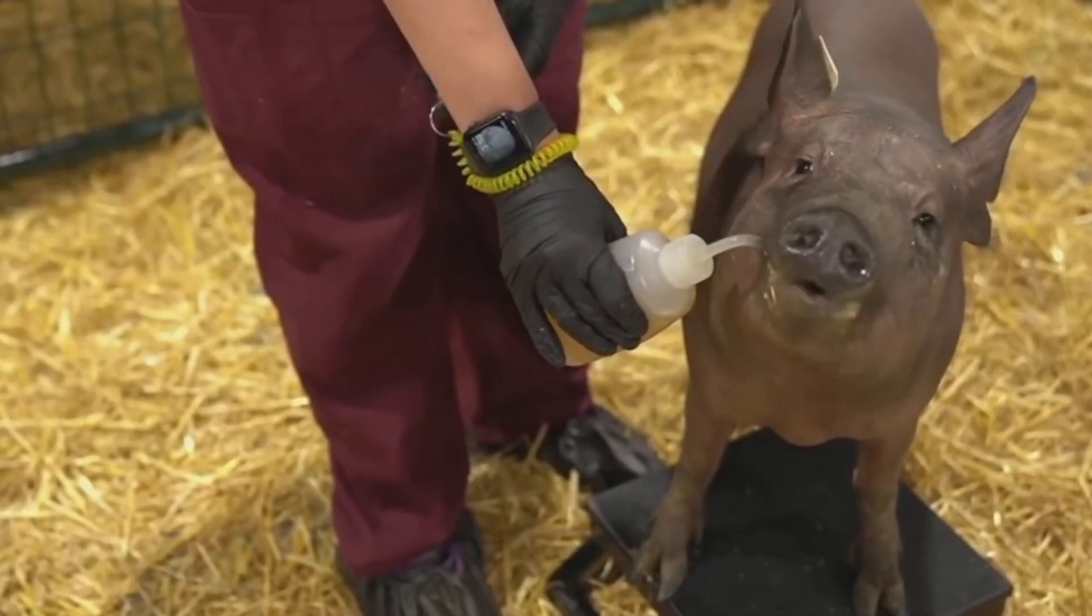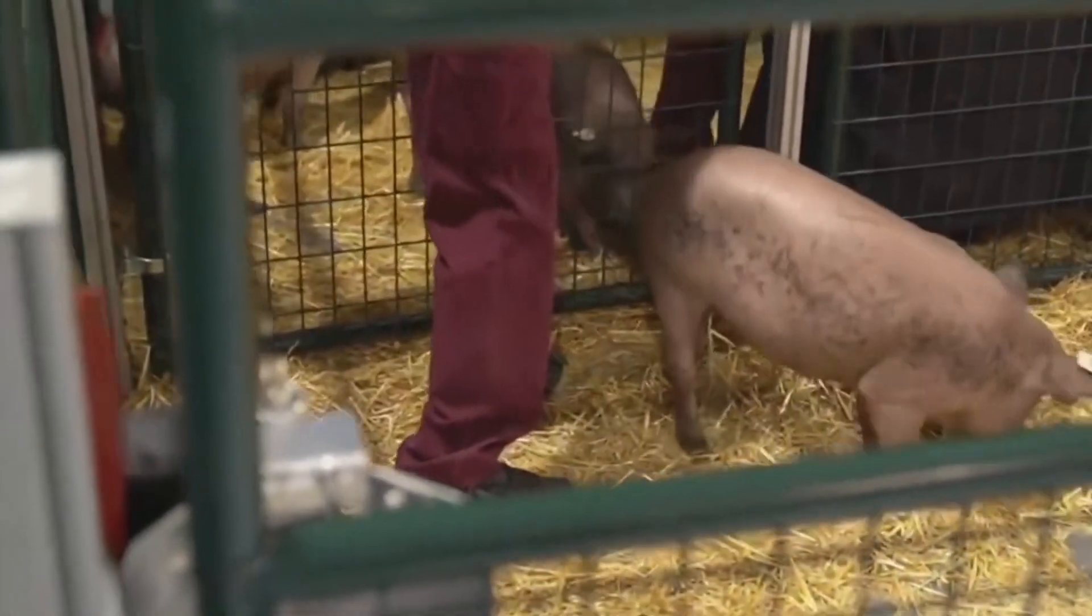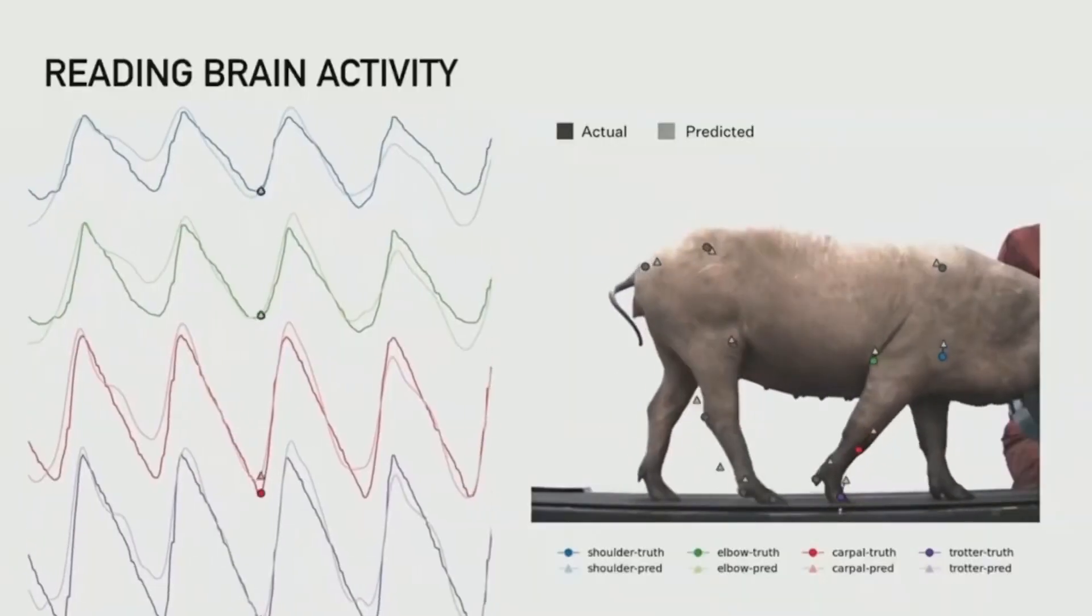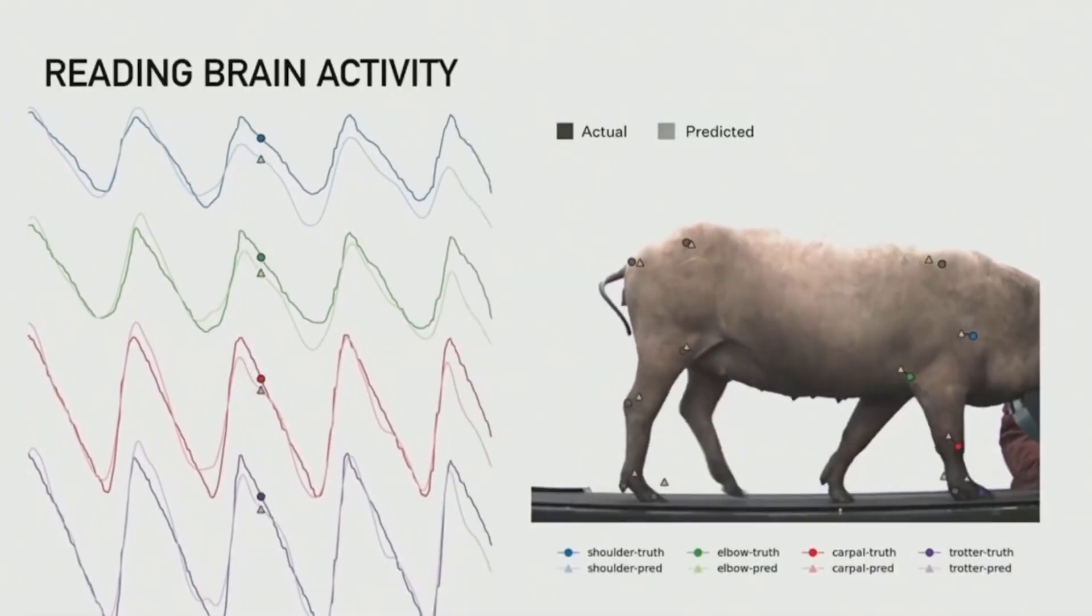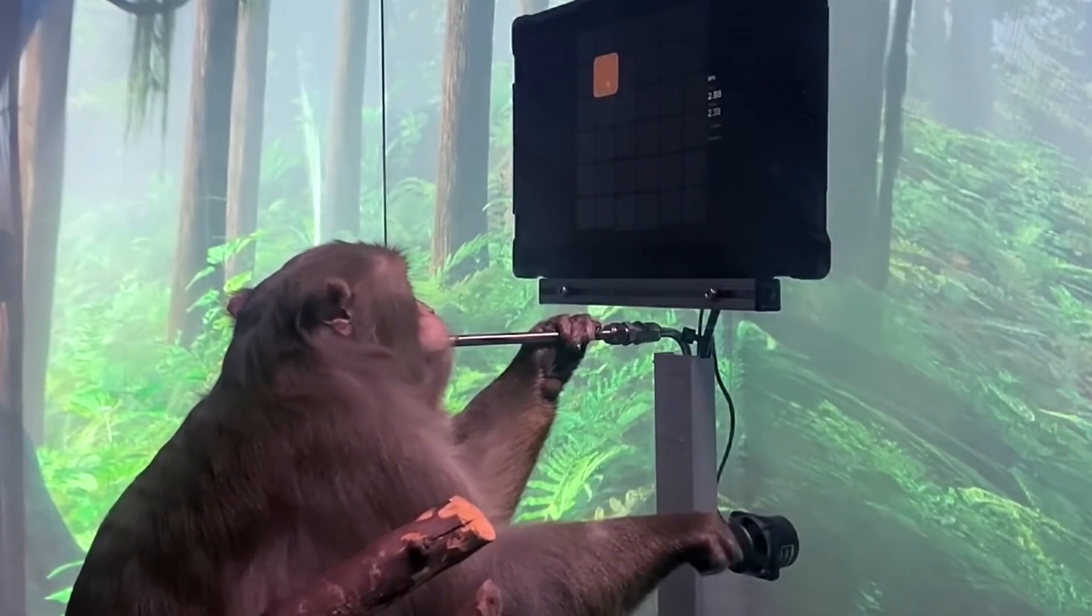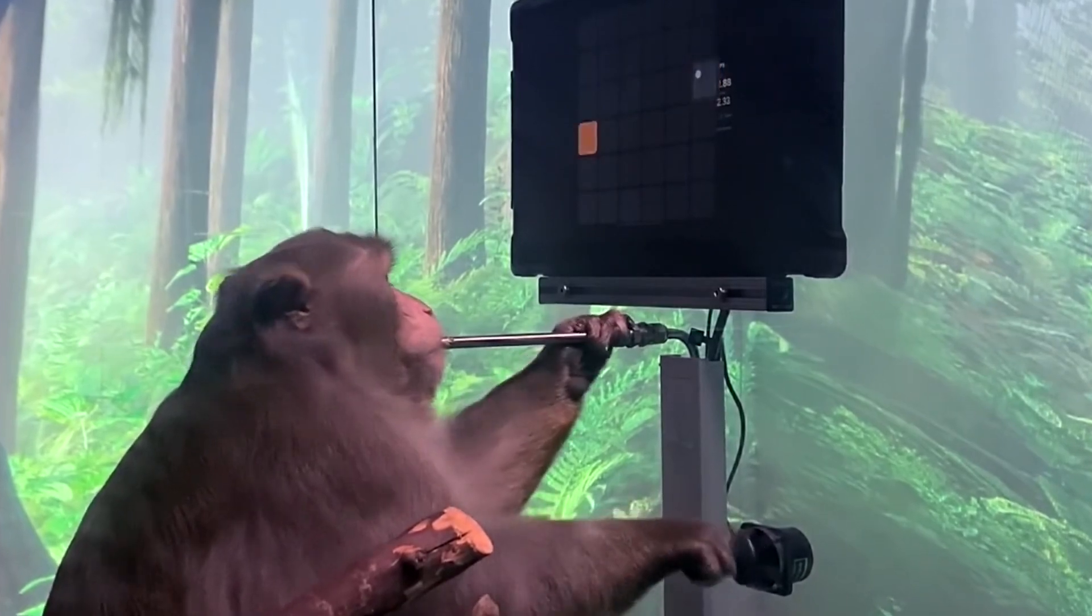They even released footage showing how the chip could track her neural activity and predict her movements as she trotted on a treadmill. Again, in 2021, Neuralink made headlines by releasing a video showcasing a monkey playing a video game using its mind.